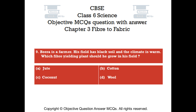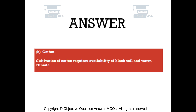Question number 9. Bira is a farmer. His field has black soil and the climate is warm. Which fiber-yielding plant should he grow in his field? Option A: jute. Option B: cotton. Option C: coconut. Option D: wool. The right answer is option B — cotton. Cultivation of cotton requires availability of black soil and warm climate.